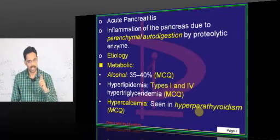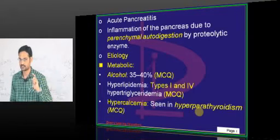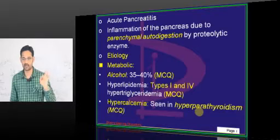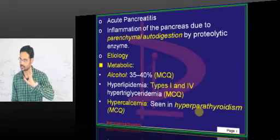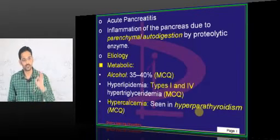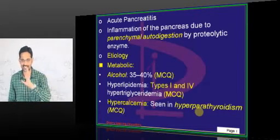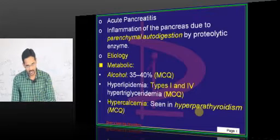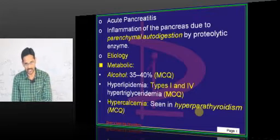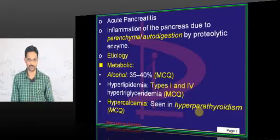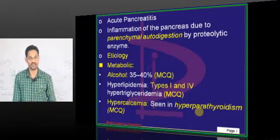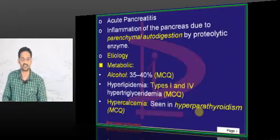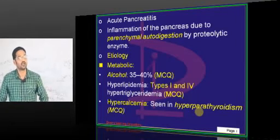Endocrine function involves the islet cells of Langerhans — alpha, beta cells secreting insulin, somatostatin, and so on. The pancreas will then secrete enzymes into the duodenum, where they become activated and start the process of digestion.